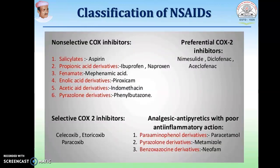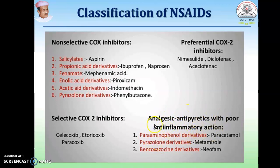This is the classification of NSAIDs. They are classified as non-selective COX inhibitors, differential COX-2 inhibitors, selective COX-2 inhibitors, and certain drugs with analgesic and antipyretic action but with poor anti-inflammatory action. This is again the chemical classification with their examples.